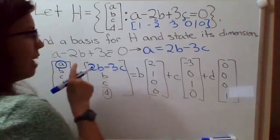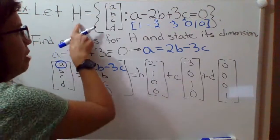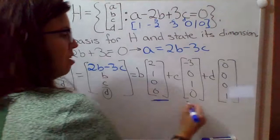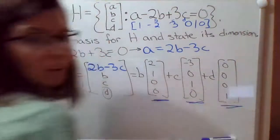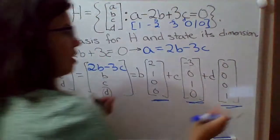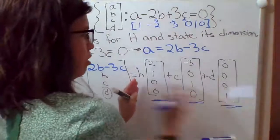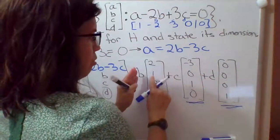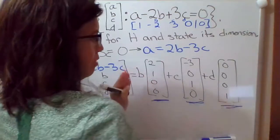So this means that any vector in H can be expressed as a linear combination of these three vectors here. Also notice that if we created a matrix whose columns are these three vectors, notice that you would definitely have a pivot in every column.